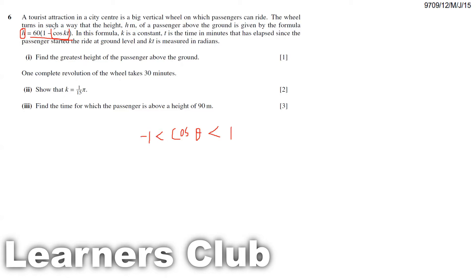In this expression, if I put one, the height will become zero. But if I put minus one, then minus of minus, so it gets added. To find the maximum height, I have to substitute minus one.